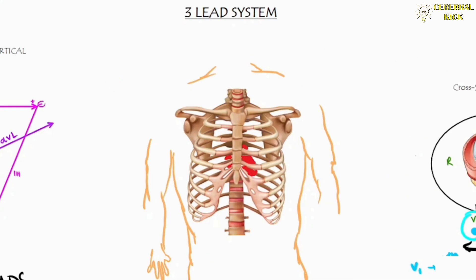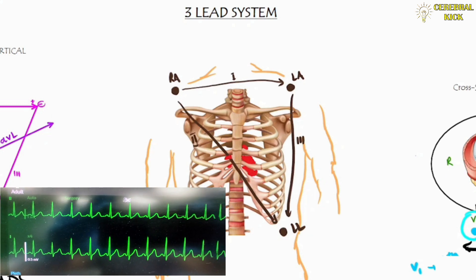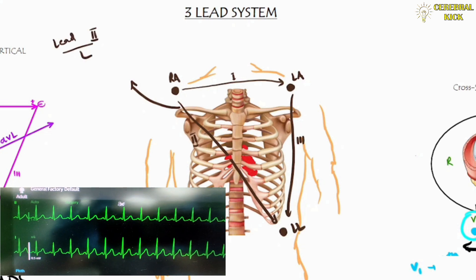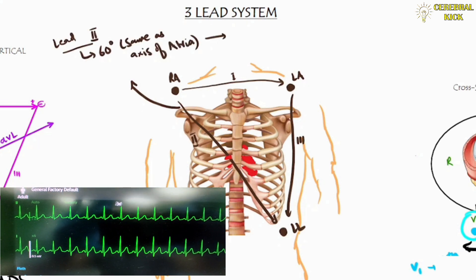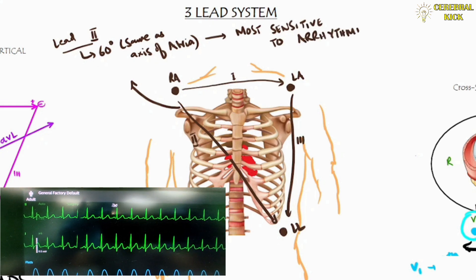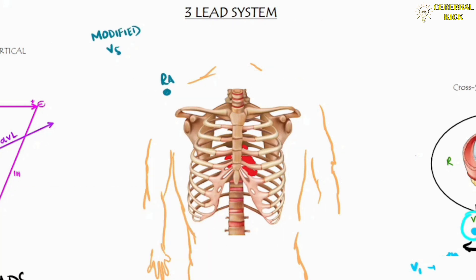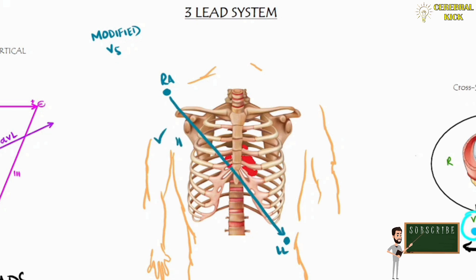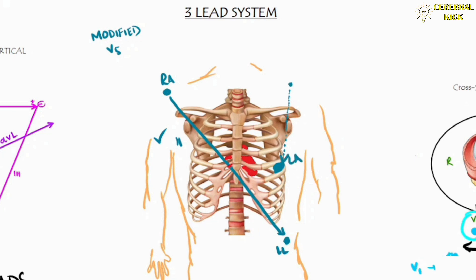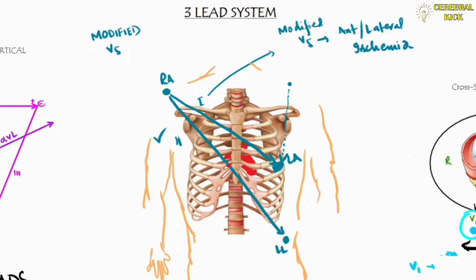In the OR, we use the three-lead system, where with the right arm, left arm, and left leg, the Einthoven's triangle is easily completed. We set the cardiac monitor at Lead 2 because Lead 2 at 60 degrees is in parallel with the axis of the atrium, so many arrhythmias can easily be picked up. Another orientation through three leads is modified V5, where the left arm electrode is placed at the V5 position on the chest. This allows you to monitor Lead 2 and set the cardiac monitor at Lead 1, which effectively becomes modified V5, helping in detection of anterolateral ischemia.